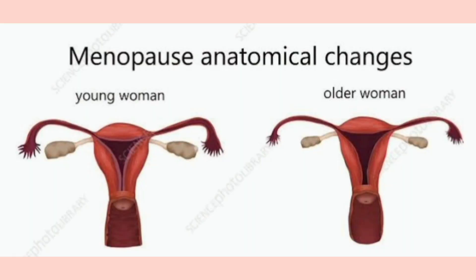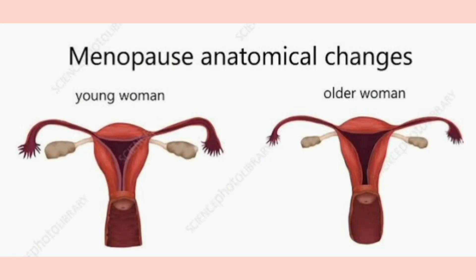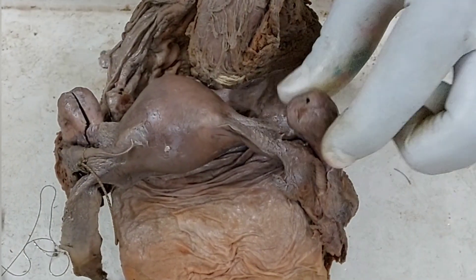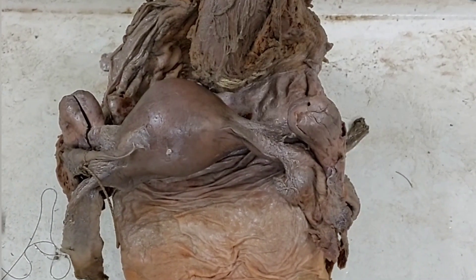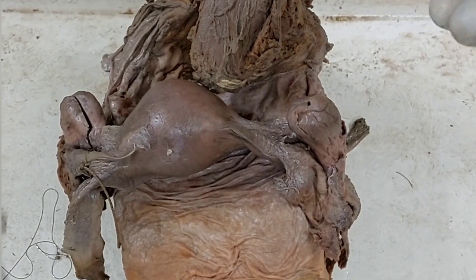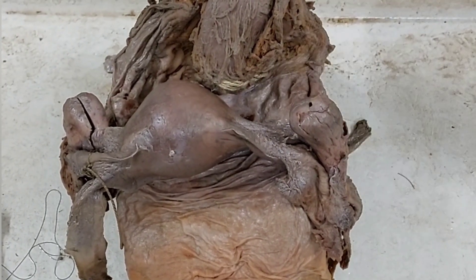The ovary is smaller before menarche and also after menopause. During reproductive life the measurements are 3, 2, 1. Before puberty — before menarche when menstruation has not yet started — and after menopause, the size of the ovary is much smaller. After menopause as age advances, the ovary becomes so small it looks like fibrous tissue or a fibrous nodule.